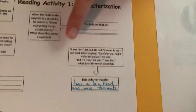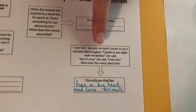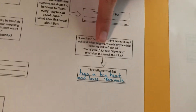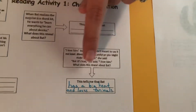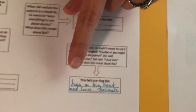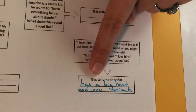So here we go. It says: 'I love him,' Bat said. He hadn't meant to say it out loud. Mom laughed. 'Careful or you might make me jealous,' she said. 'But it's true,' Bat said. 'I love him.' What does this reveal about Bat? This is where you want to put your answer. The answer I gave is: this tells me that Bat has a big heart and loves animals. Because just by looking at the little baby skunk for just a few minutes, he loves him and is determined to care for him. So that's what that character trait told us.